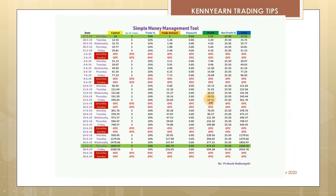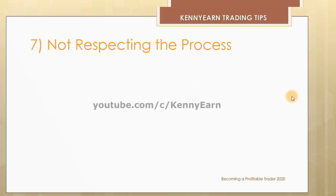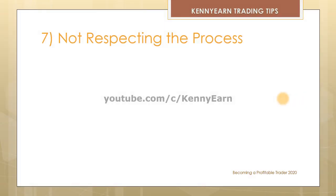I have another money management plan that I'll be posting in my Telegram channel and group. This one is more detailed with number of trades, percentage, payouts, and net profit. It's a five-week money management plan where with ten dollars you can make two thousand nine hundred dollars. You have to know your winning ratio to achieve this.